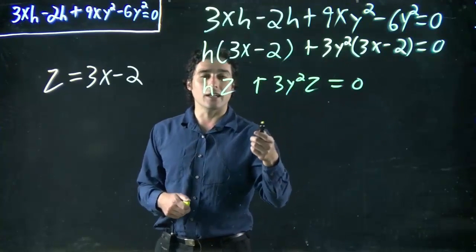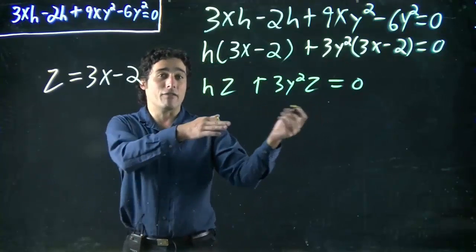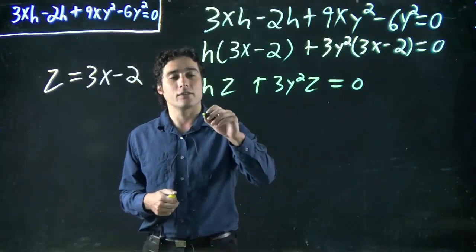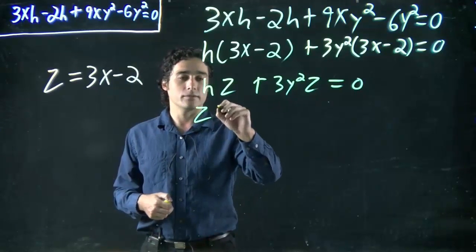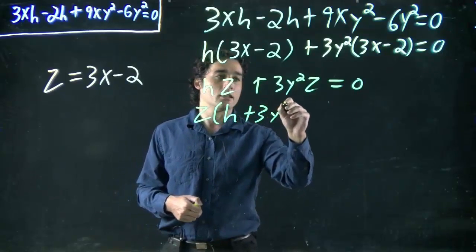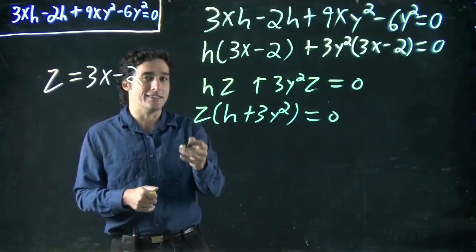And now we can start seeing this is common factoring again. I have a z in each term. I can factor out a z or divide both terms by z and still have things left. So I can put the z in front, and now I have h plus 3y squared. Remember, all I did was divide each term by what I dragged out in front, the z.